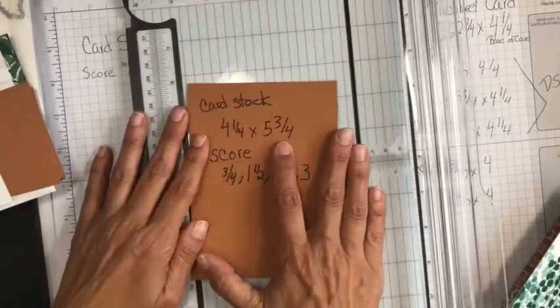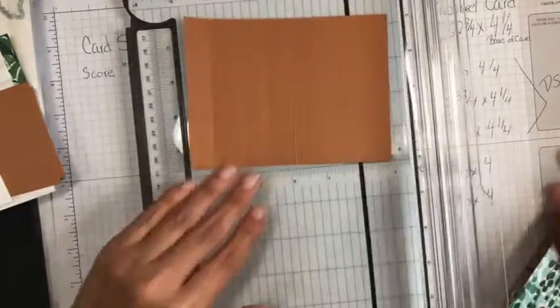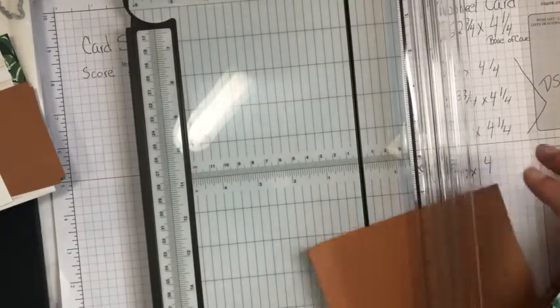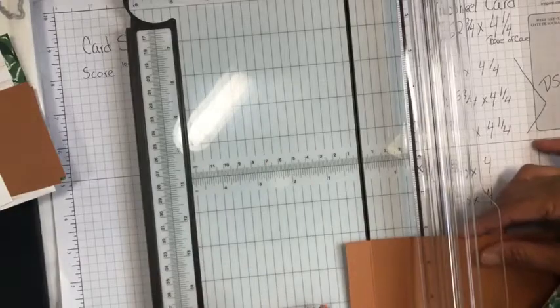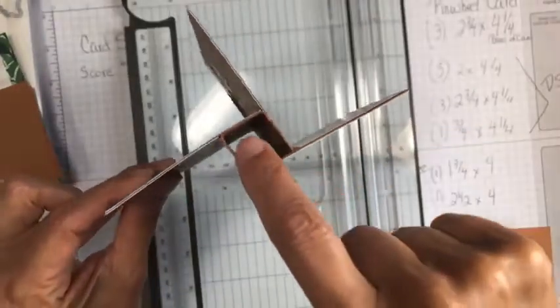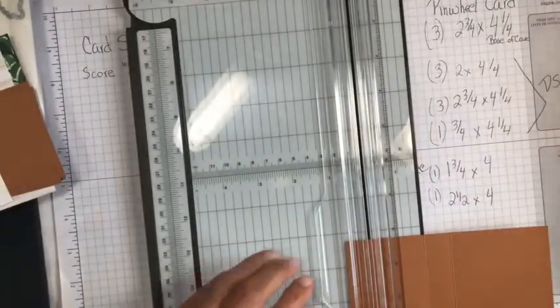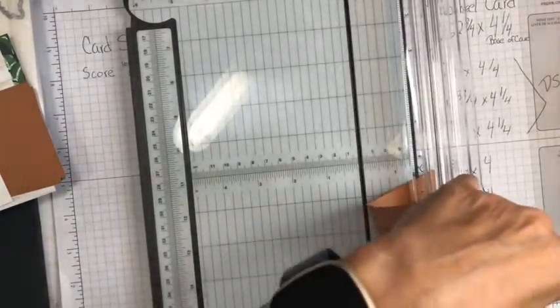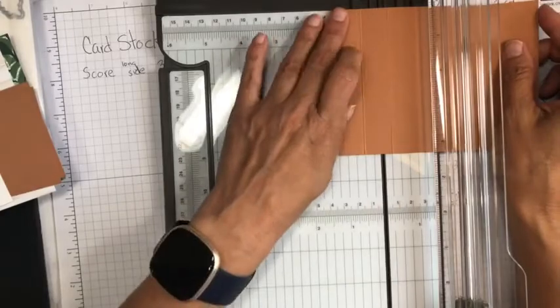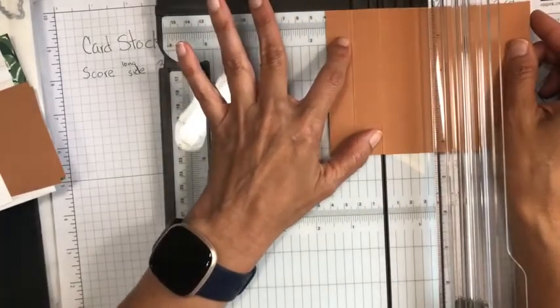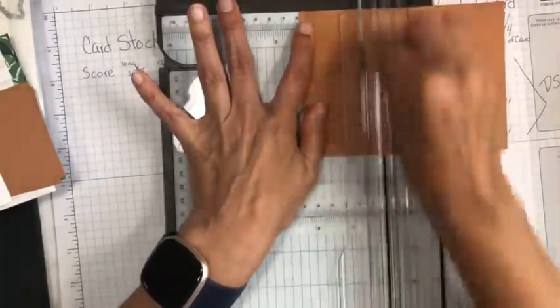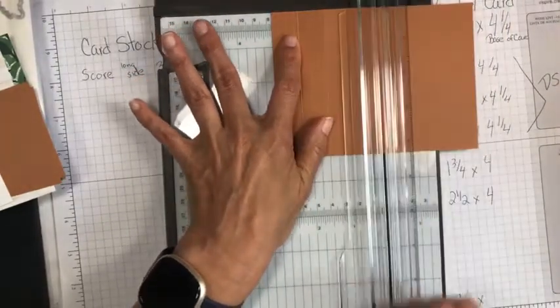We're going to take a piece of cardstock. It's four and a quarter by five and three-fourths. We're going to score it at three and a quarter. And what you're doing is building this little guy right here. So we score, and then we score again at one and a half. Then there's two and a quarter. And then I think it's three.